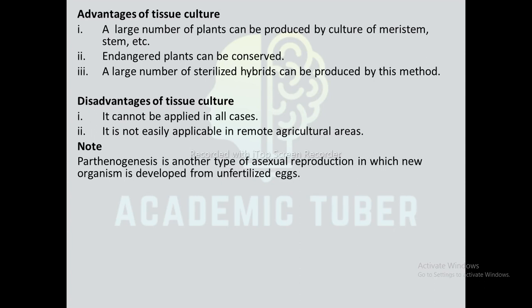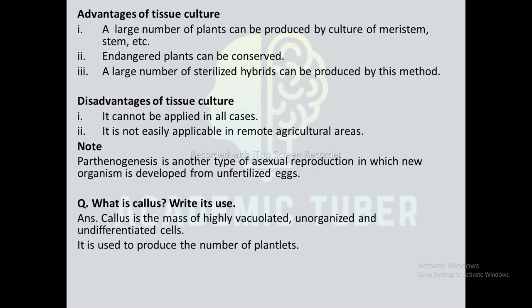Note: Parthenogenesis is another type of asexual reproduction in which a new organism is developed from unfertilized eggs. Question: What is callus and how is it used? Callus is the mass of highly vacuolated, unorganized, and undifferentiated cells. It is used to produce a number of plantlets at one time.